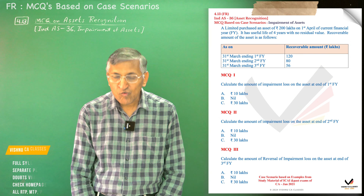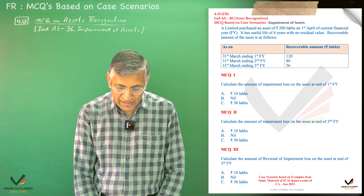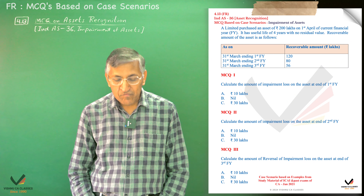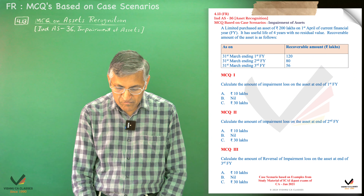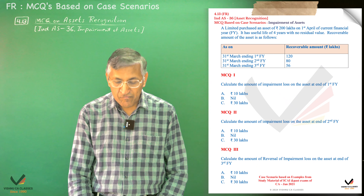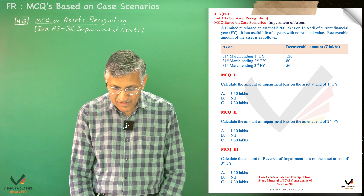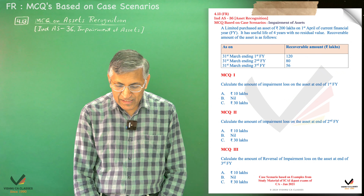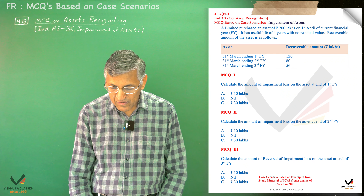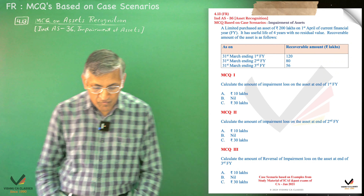We have to calculate different MCQs here. First, we have to calculate impairment loss at the end of the first year. Second, impairment loss at the end of the second year. Third, we have to calculate reversal of impairment loss at the end of the third year.